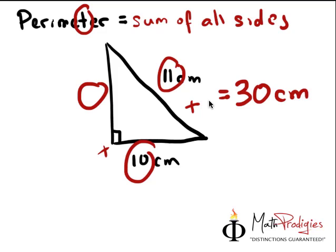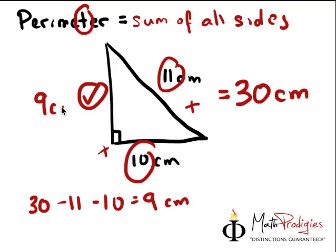So, if you want to find out what this is, all you have to do is take 30 cm minus 11 minus 10, and you will get 9 cm. 9 cm is here.